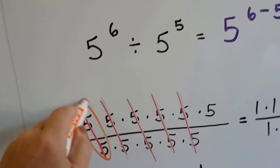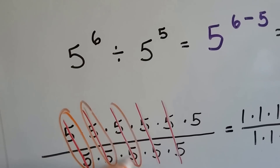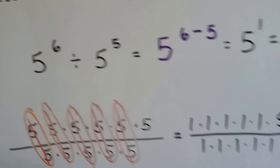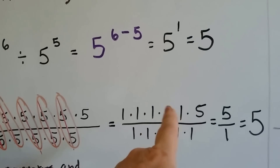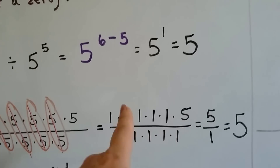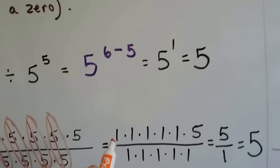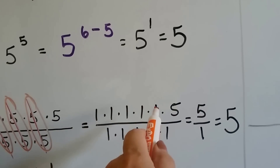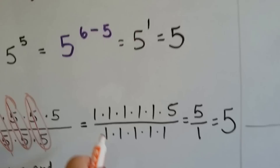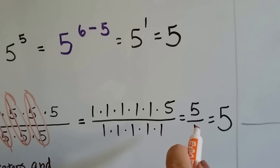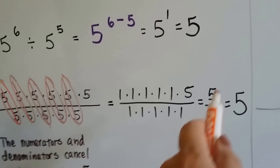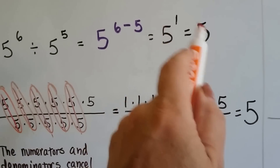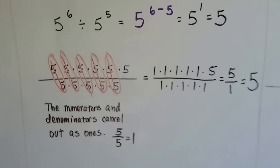So we've got five 1's on top and five 1's on the bottom. If you were to do this multiplication: 1 times 1 is 1, times 1 is 1, times 1 is 1, times 5 is 5. And multiplying all the 1's on the bottom together gives 1. You end up with 5 over 1, which equals 5.